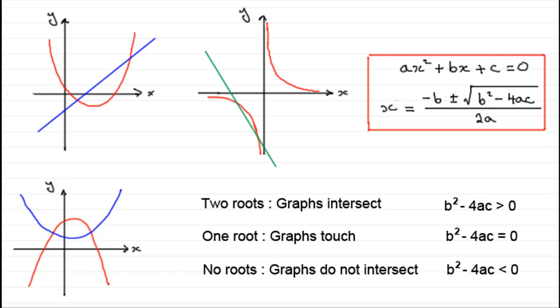So, I hope that's given you some idea, then, of how we can look at the points of intersection of two graphs when we come to solve them simultaneously. Now, I did say that I would run through some examples, because that's the only way you're going to get to grips with this. So, I hope you'll have a look at these.